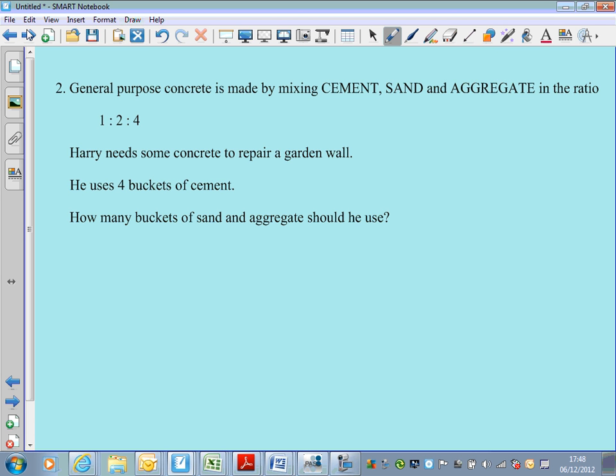Reading on, it says, Harry needs some concrete to repair a garden wall. Well, you know what? That's just fluff, isn't it? We don't need that. That's nothing to do with the maths. It says he uses four buckets of cement. Now that is relevant, isn't it? How many buckets of sand and aggregate should he use? That's the question, isn't it? Because it's got a question mark at the end. This is what we've got to find out. How many buckets of sand and aggregate should he use?